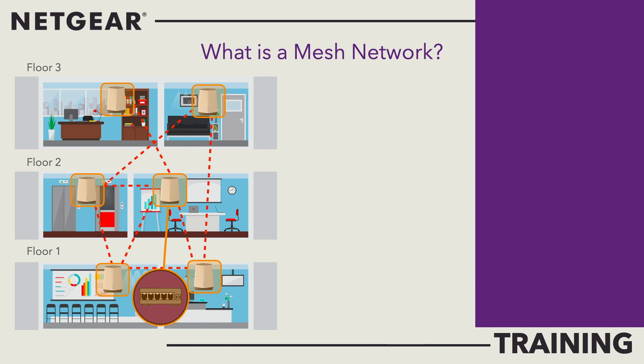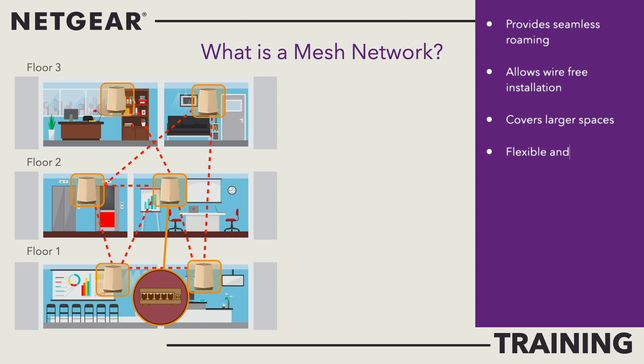Mesh networks offer a range of benefits over a standard network topology. They provide seamless roaming, allowing people to move around a building without losing connection or having to attach to a different SSID or network name based on location. Wire-free installation allows satellites to be placed in locations which require coverage but cannot easily be cabled, making a wireless mesh network flexible and expandable. Remote management is provided using the powerful Netgear Insight product — you can learn more about that by clicking this link.